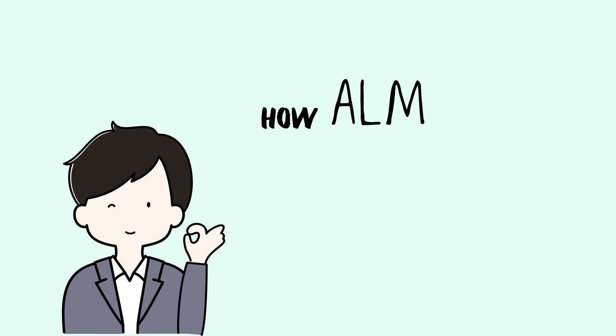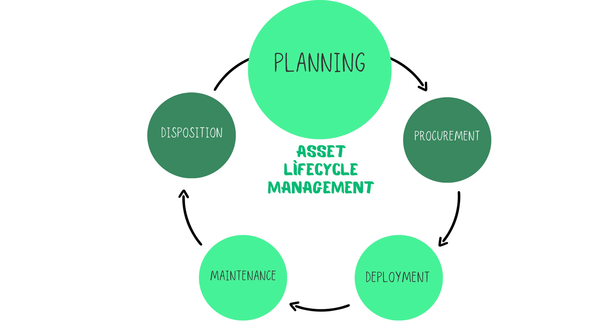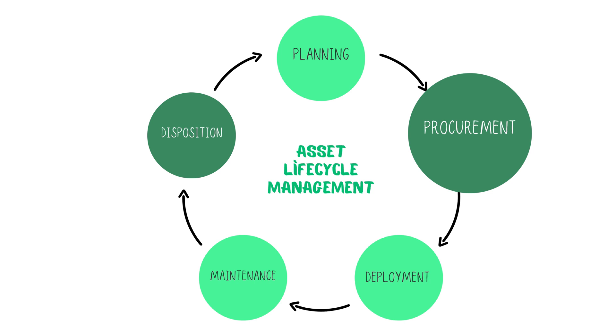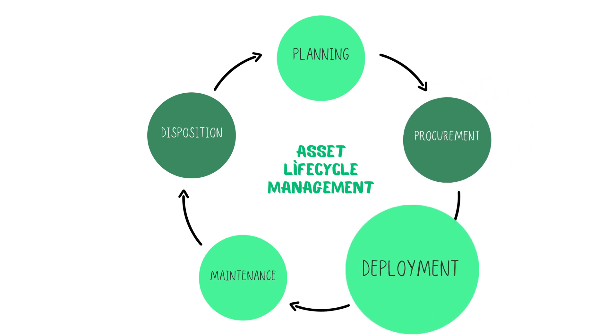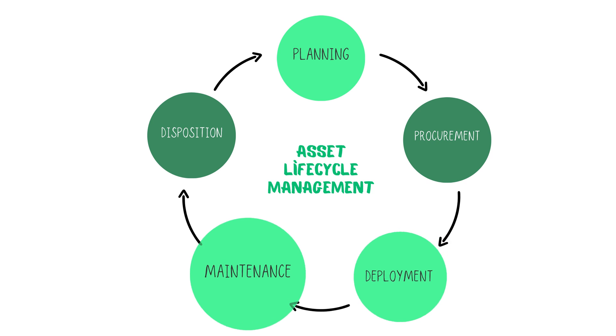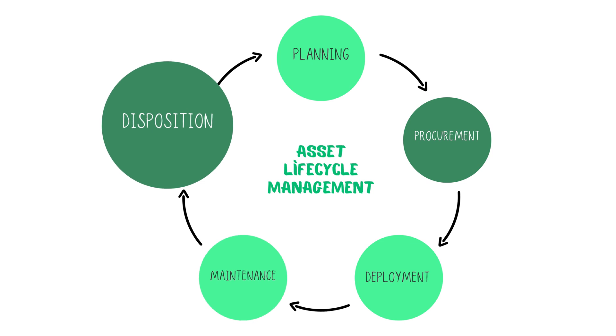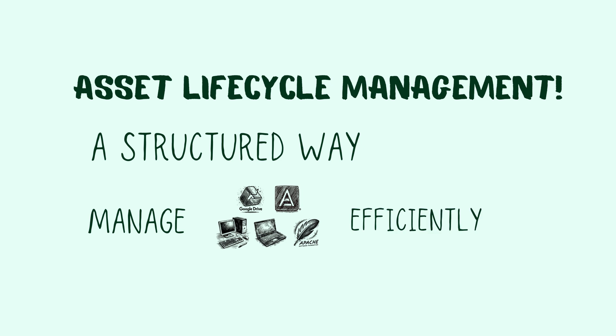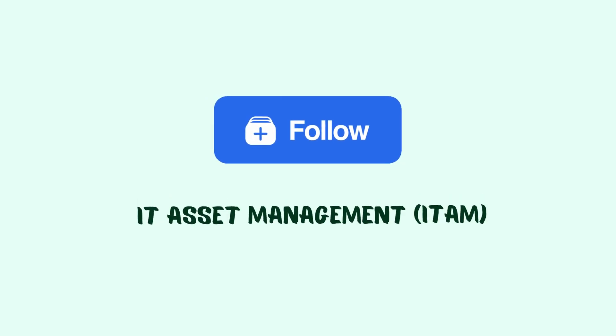Now you understand how ALM helps manage IT assets efficiently. Let's recap the five key stages: Planning — figuring out what assets your business needs. Procurement — buying and tracking assets the smart way. Deployment — setting up and assigning devices hassle-free. Maintenance — keeping assets updated, secure, and working smoothly. Disposition — retiring, reusing, or recycling old devices responsibly. And that's Asset Lifecycle Management — a structured way to manage your IT assets efficiently. Follow us to learn more about IT asset management. Thank you for watching, and see you next time.